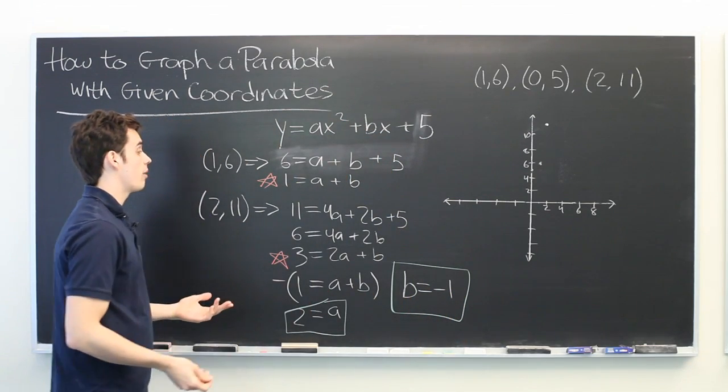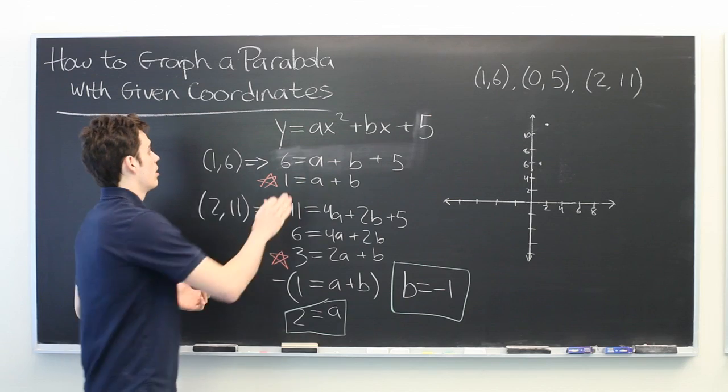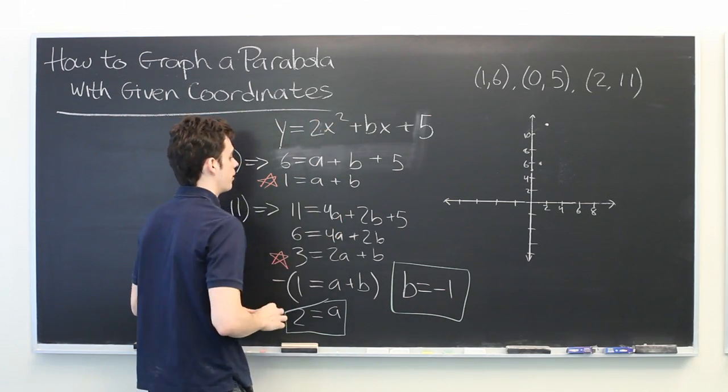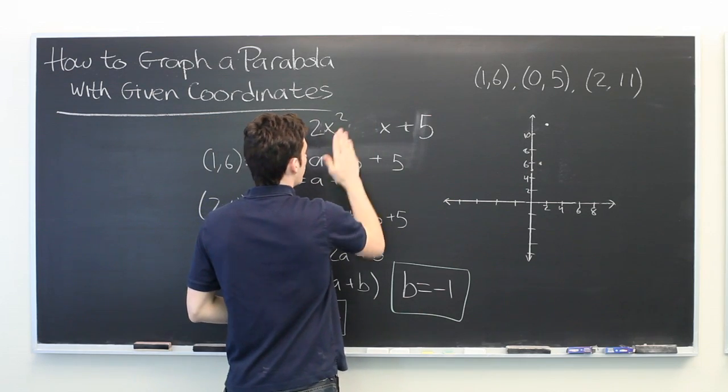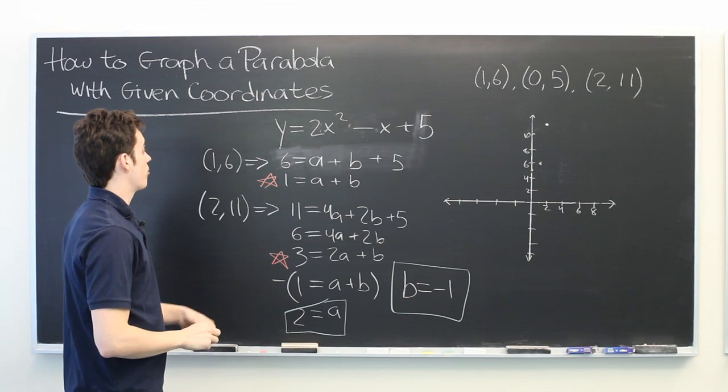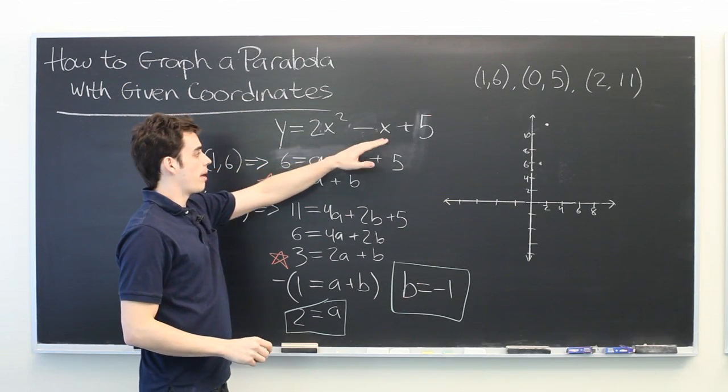But now we have all the information we need to find the equation of our parabola. So we know that a is 2, and we know that b is negative 1. So here we have y equals 2x squared minus x plus 5.